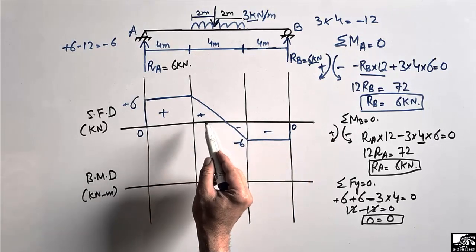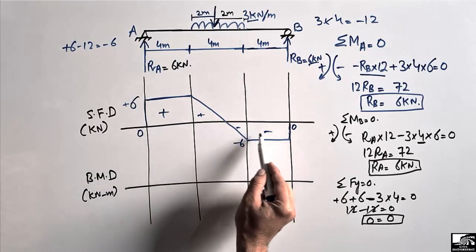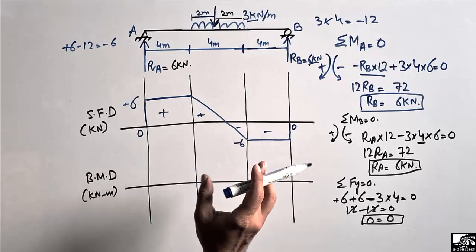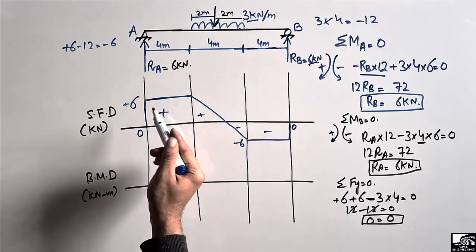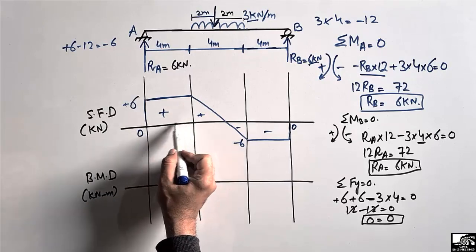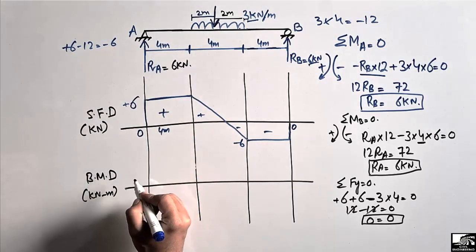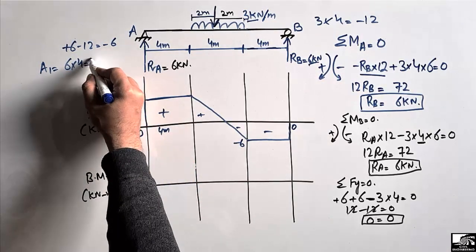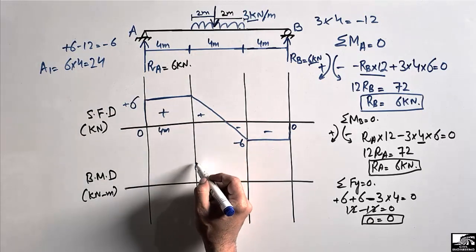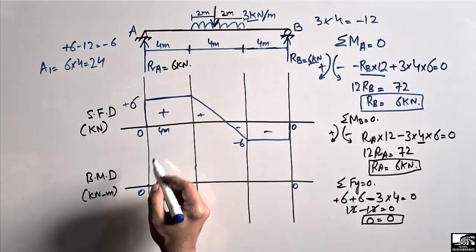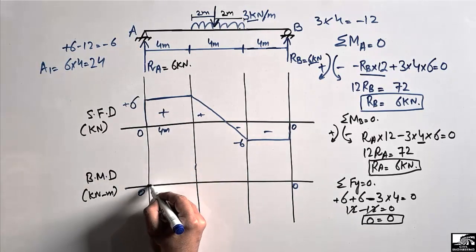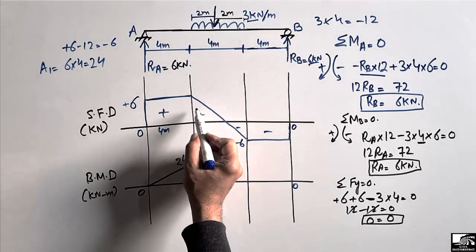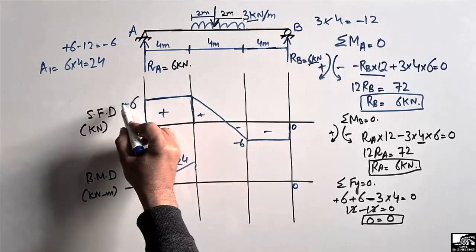Values above the reference line are positive and below are negative. To draw the bending moment diagram, we find the area of each shear force region. The first region is a rectangle with height 6 kN and base 4 m, giving area A1 = 6 × 4 = 24 kN·m. This is a positive shear box, so the bending moment at the end of this region is +24 kN·m.